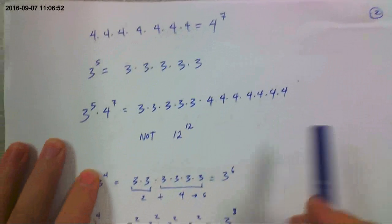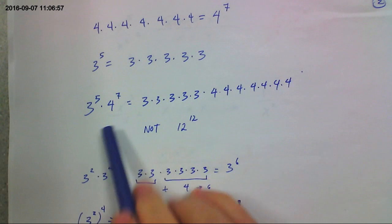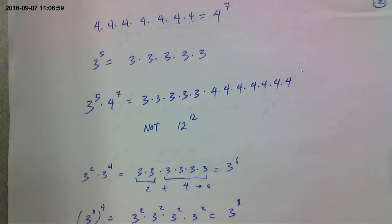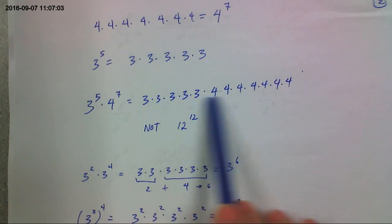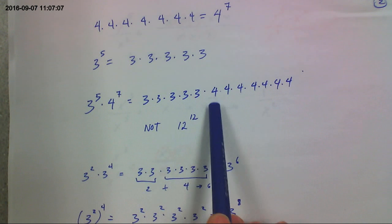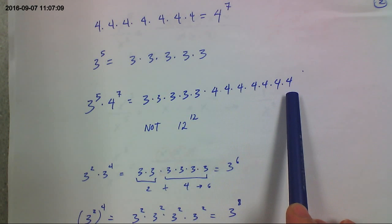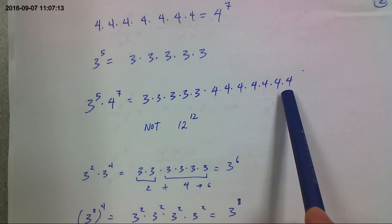So where people get a little mixed up, a lot of times people say this would be 12 because you're multiplying. But order of operations say exponents before multiplication. So this would just be 3 to the 5th, 4 to the 7th. If you write it all out, you're repeatedly multiplying a 3 5 times. And you're repeatedly multiplying a 4 7 times. Not a 12 12 times. This is a much bigger number than if you multiplied this out.